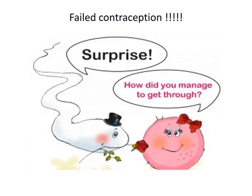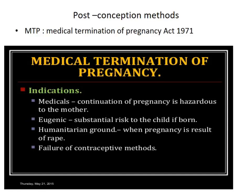In spite of all these methods of contraception, there are chances of failure. This leads to post-conception methods — the Medical Termination of Pregnancy (MTP) Act, 1971. This act was made because people were going to quacks to terminate pregnancy, using unhygienic or unscientific methods that led to complications. The government now allows abortion of the fetus if unwanted. Indications include: any medical emergency to the mother, eugenic reasons (genetic problems with the child), humanitarian grounds such as pregnancy resulting from rape, and failure of contraceptive methods.